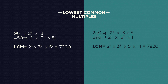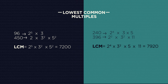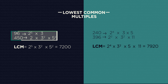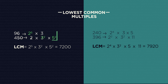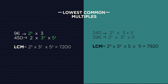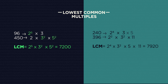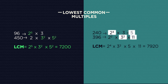Have a look at these two examples. Can you see what's happening? We take the largest amounts of each number from either list — so we'll take the 2 to the power of 5, the 3 squared, and the 5 squared — then multiply these numbers together and you'll get the lowest common multiple. See how we took the largest amounts for 240 and 396.